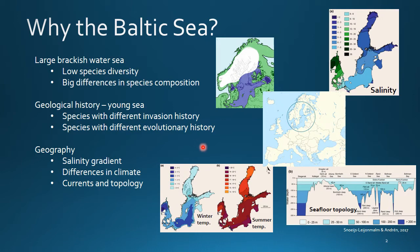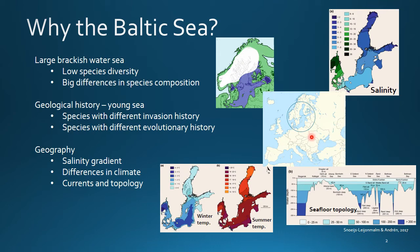So why the Baltic Sea? The Baltic Sea is this large enclosed brackish water sea in northern Europe, characterized by having low species diversity and big differences in species composition from the outer parts to the inner parts. Furthermore, this is a quite young sea. It opened up to the high saline North Sea only 8,000 years ago after the latest ice age, and before that it was a huge freshwater lake. So the species within the Baltic Sea have different invasion history — some arrived earlier than others.